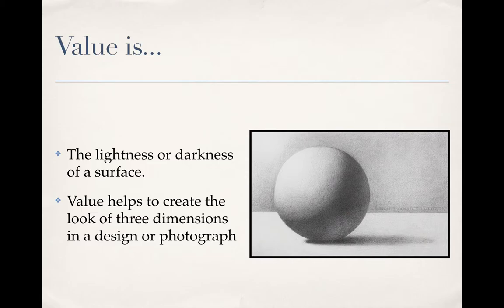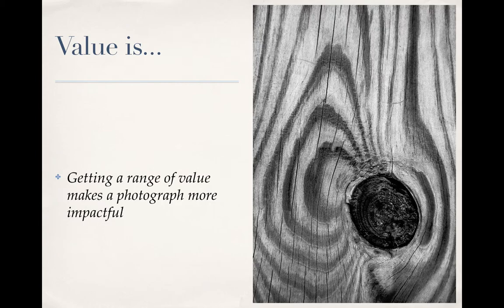When we deal with value in photography, you also need to look at a range of value. Say you have really light areas and really dark areas. In this photograph, to make things easier to understand, I've changed it to a black-and-white photograph where I have really dark values in the knot, some medium values in the grain of the wood, and really light areas in the light areas of the grain.